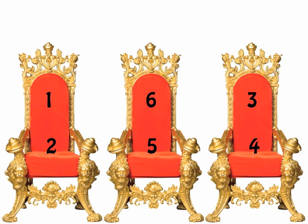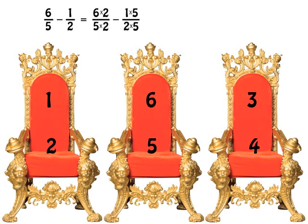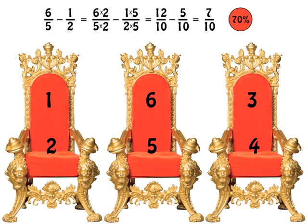The most comfortable throne is six fifths; the least comfortable is one half. So we take six fifths minus one half and we calculate — oh no — we calculate that the probability of civil war is an abysmal 70%. See if your classroom advisors can do better than this.